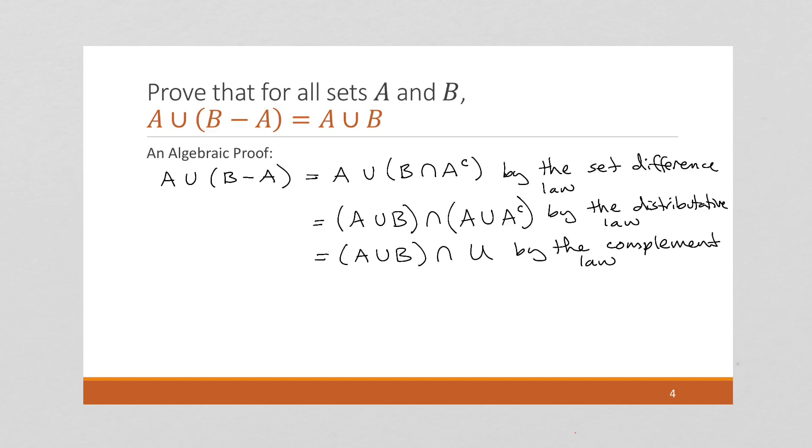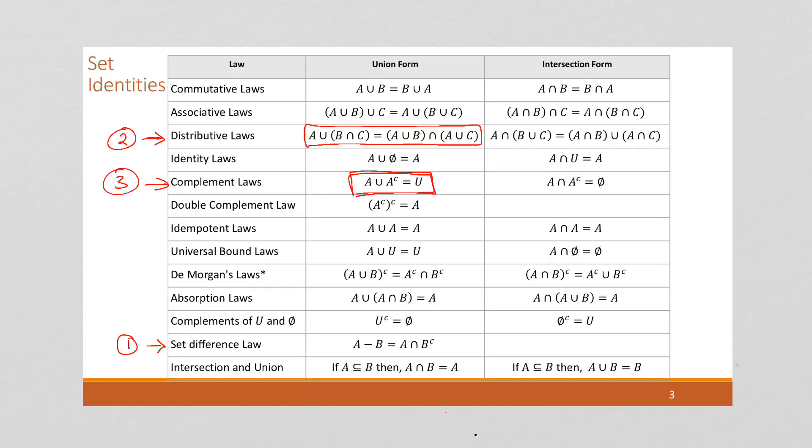And now I can look at this intersecting something with the universal set. And you can see how that just gives us whatever our original set was.